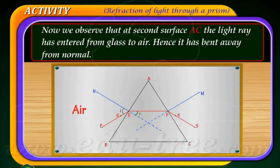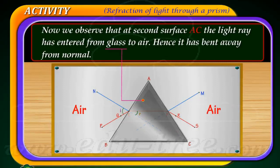Now we observe that at the second surface A C, the light ray has entered from glass to air, hence it has bent away from the normal.